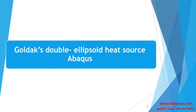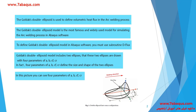In this educational video I intend to talk about the Goldak double ellipsoid model and teach you all important points about it. The Goldak double ellipsoid model is used for defining volumetric heat flux in the arc welding process. This model is the most famous and widely used model for simulating arc welding processes in Abaqus software.